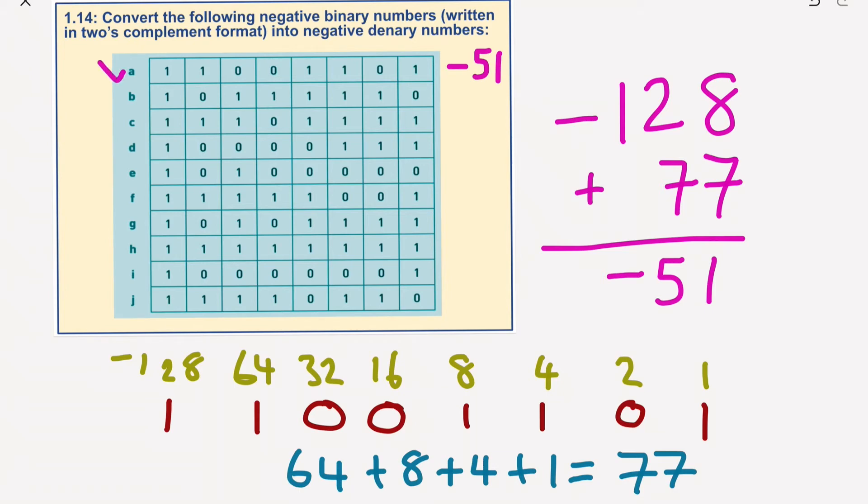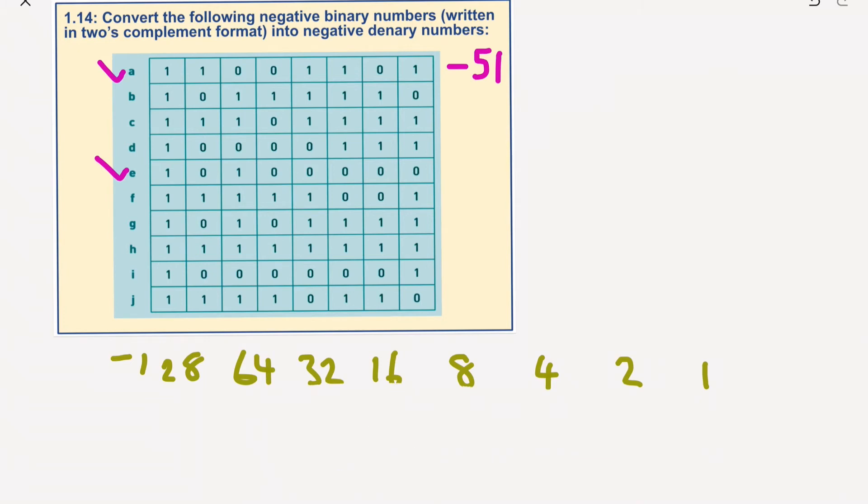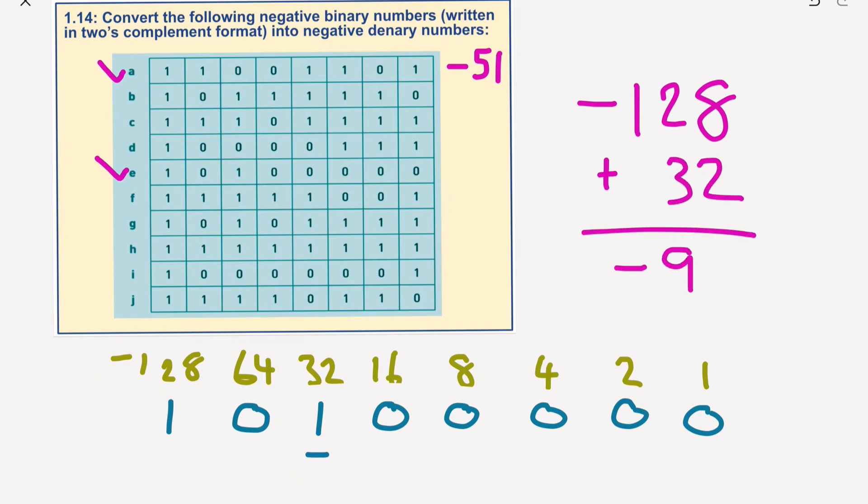Let's do E. So rub this out, and for E we have 1, 0, 1, 0, 0, 0, 0, 0. So we've got to take that into account. I'm going to go minus 128 plus 32. It would give us a number of negative or minus 96.